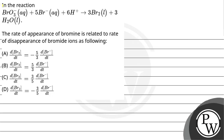Hello, let's read the question. The question says that in the reaction BrO₃⁻ plus 5 Br⁻ plus 6 H⁺ gives 3 Br₂ and 3 water. The rate of appearance of bromine is related to rate of disappearance of bromide ion as following.